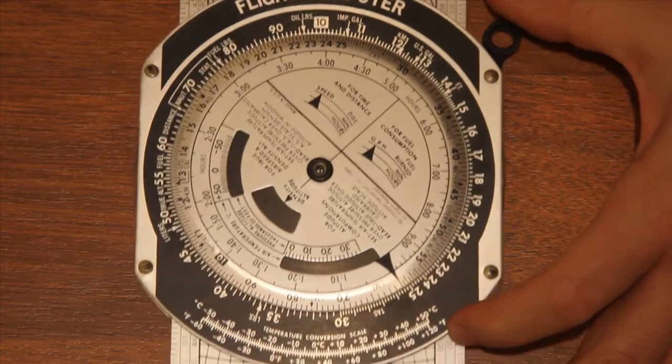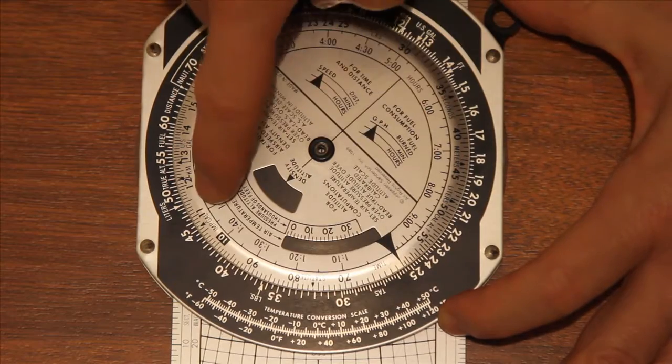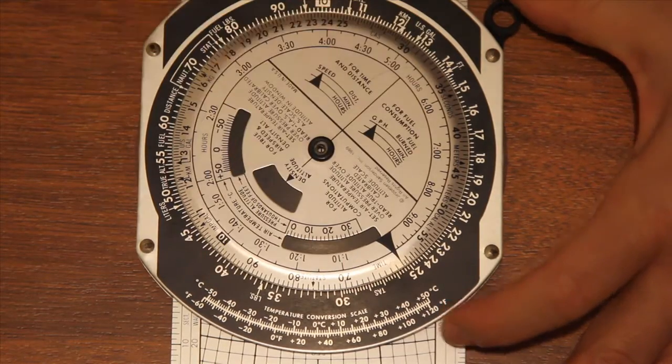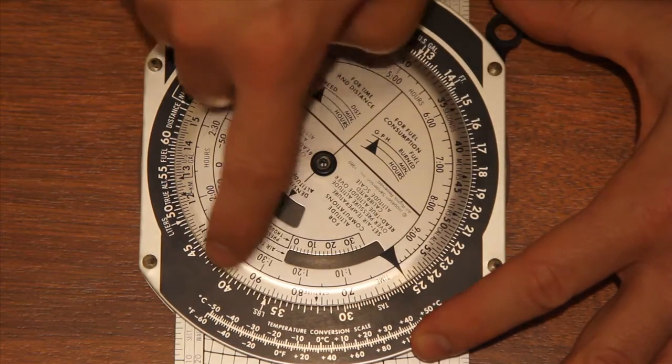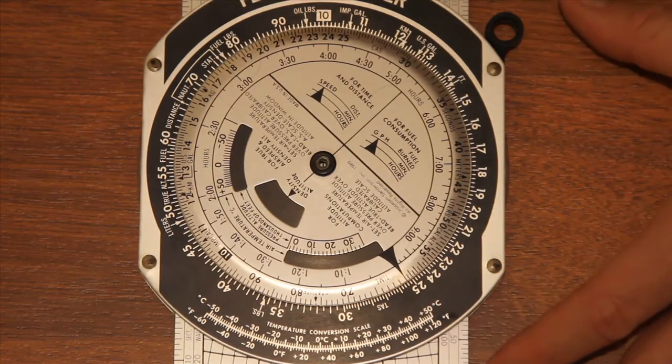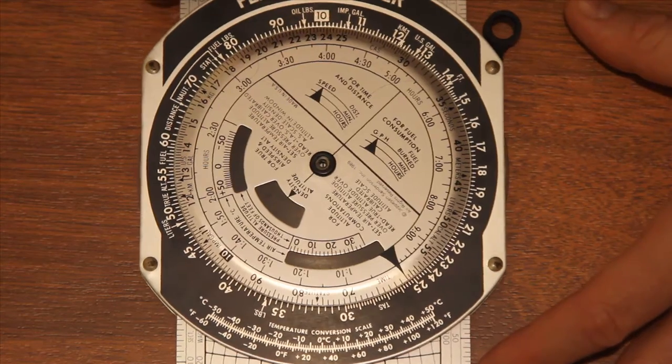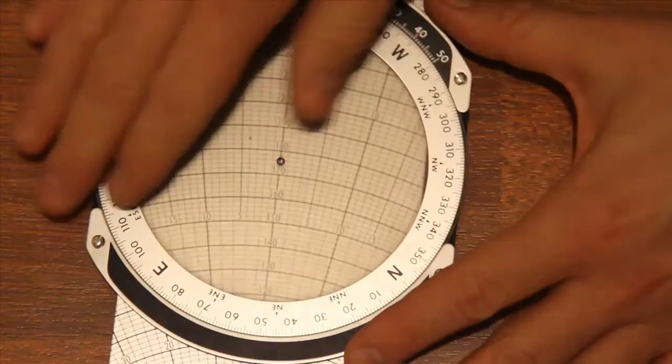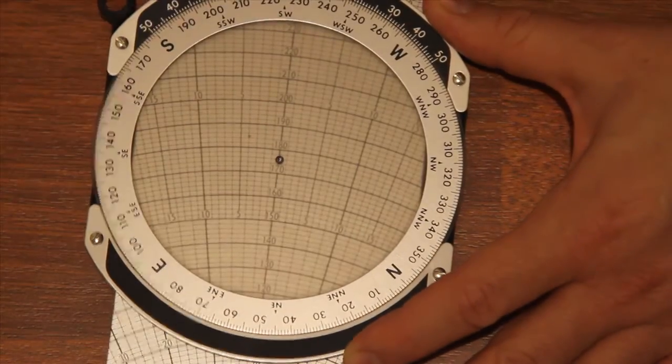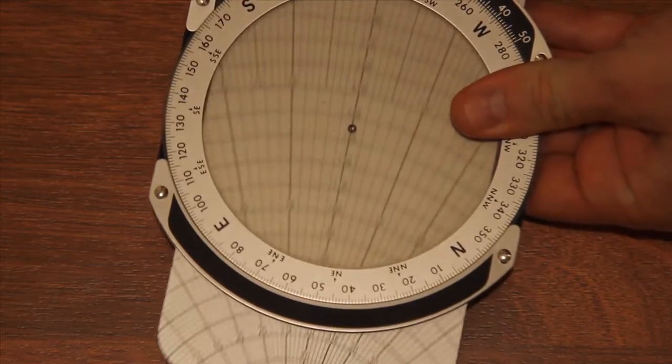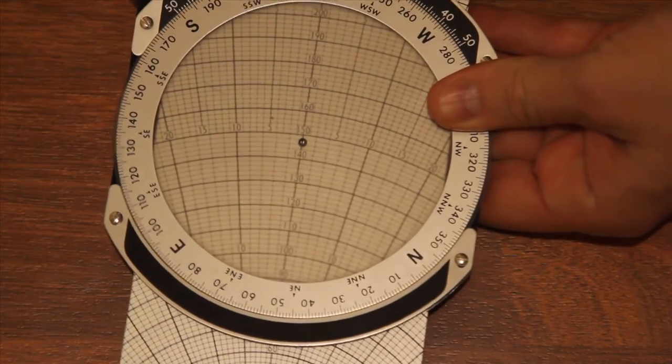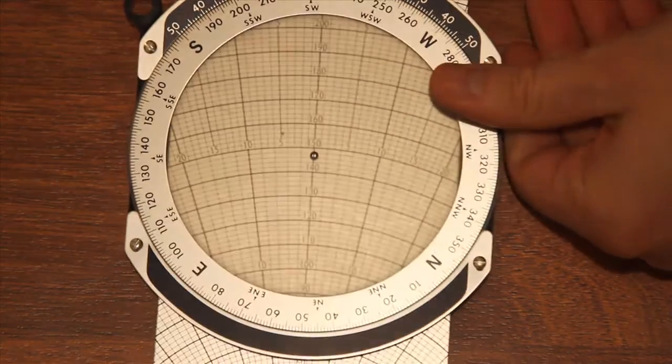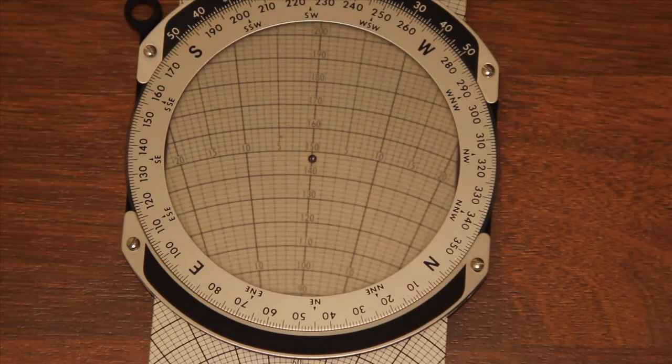On the bottom is a temperature conversion scale around the inner and outer scales for various conversion items. On the back is a clear screen with a compass rose and a slidable board which allows you to calculate things like vector calculations, crosswind, off-track calculations, that sort of thing.